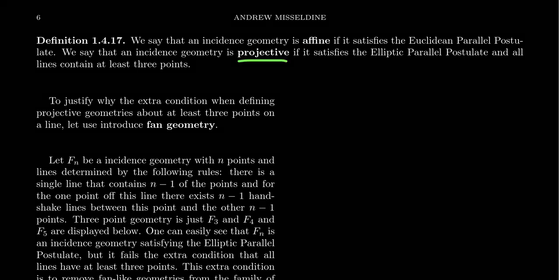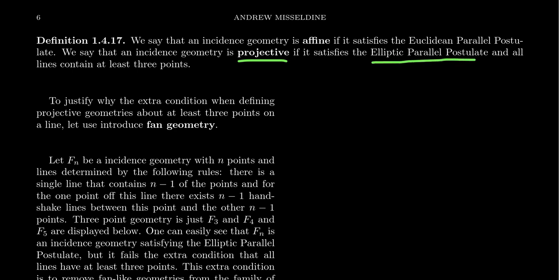Another important geometry is projective geometry. An incidence geometry is projective if it satisfies the elliptic parallel postulate and all lines contain at least three points. So we take incidence geometry, equip it with LPP, and add this strengthening of the secancy axiom — secancy only requires two points on a line, but for projective geometry we need at least three. We'll talk about projective geometry later in this lecture series, in tandem with elliptic geometry.